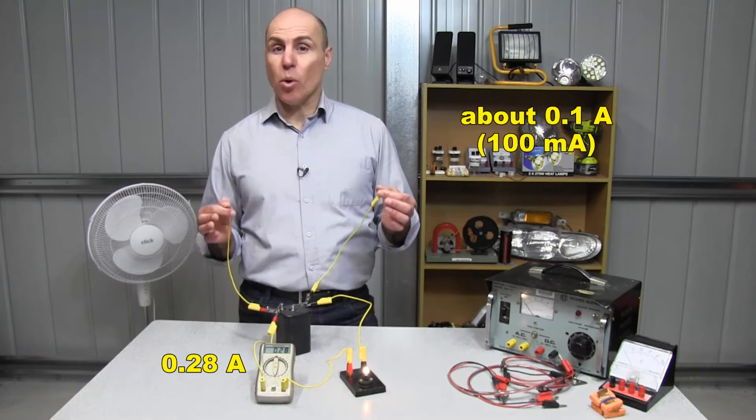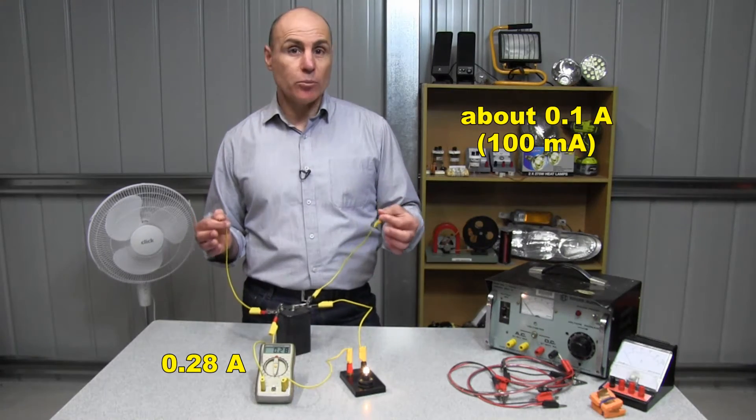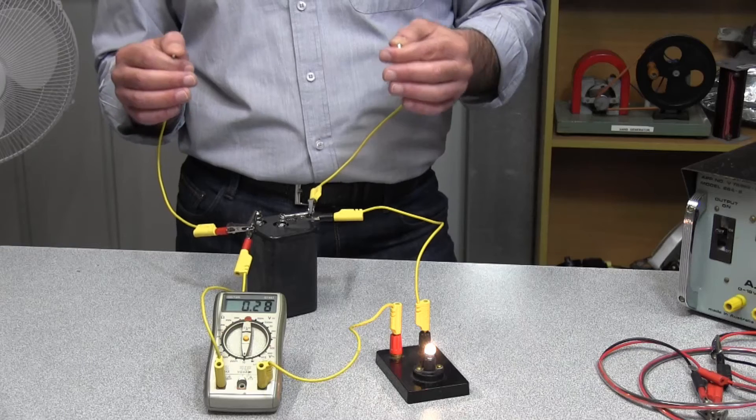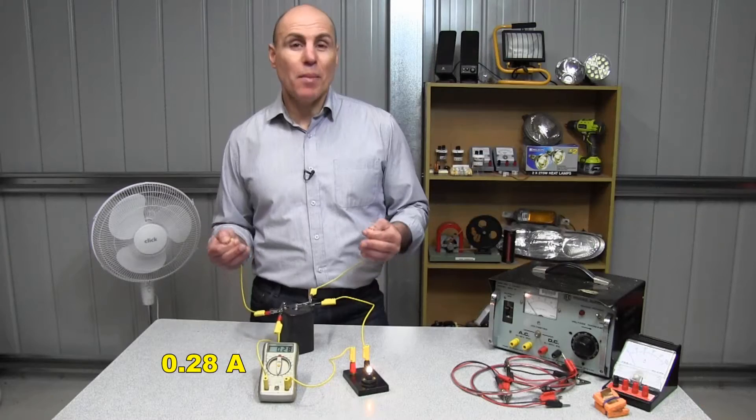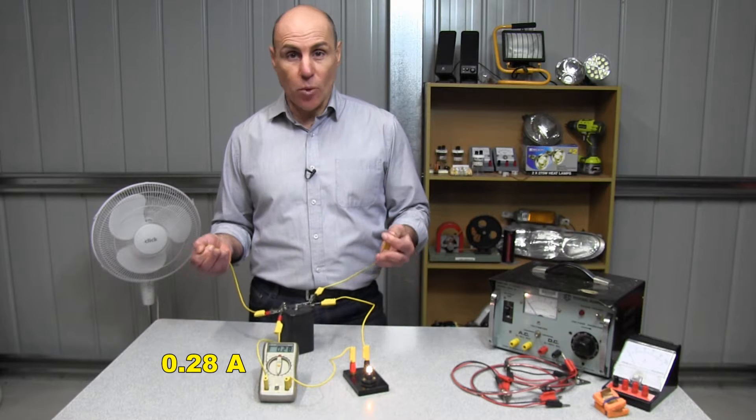In fact, it would take only about 0.1 of an amp or 100 milliamps to kill me. My heart would stop beating properly and I would collapse and die. So though 0.28 amps is going through the light globe, much less is obviously going through me because I'm not dying. And why is that?